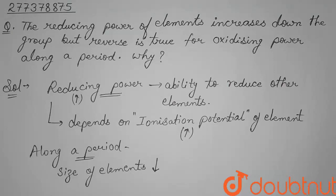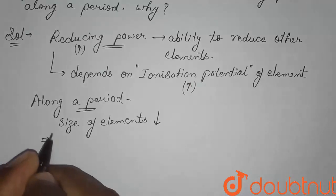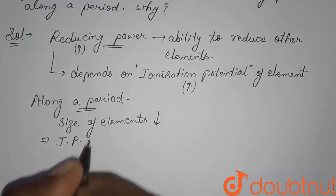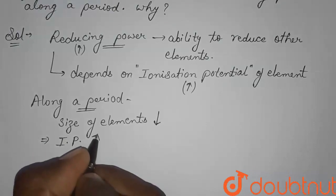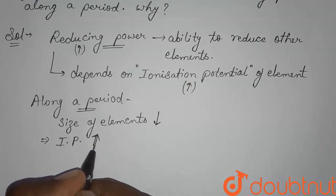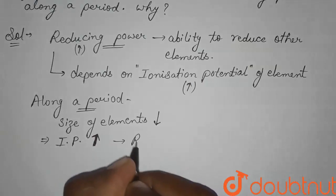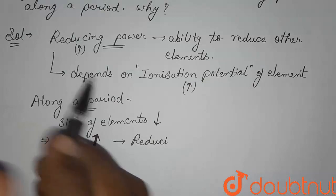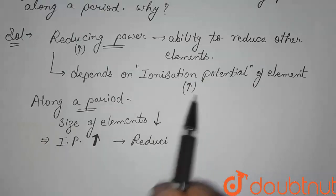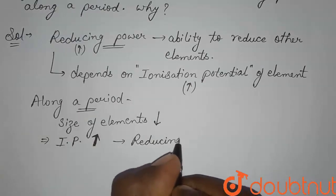As the size becomes smaller, more energy is needed to remove an electron — that means the ionization potential value increases. Therefore, along the period, ionization potential (IP) increases, and as a result reducing power also increases.